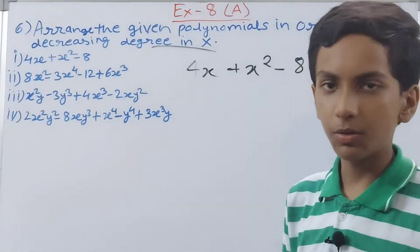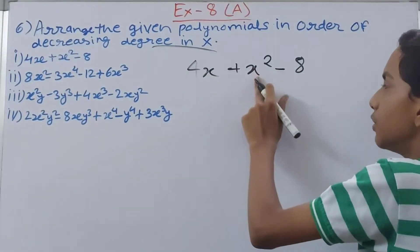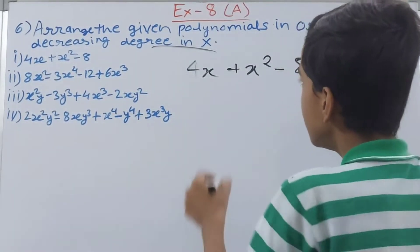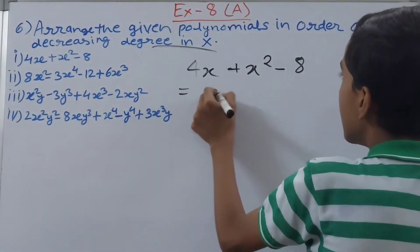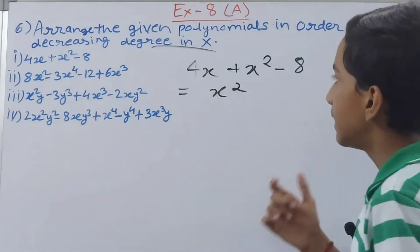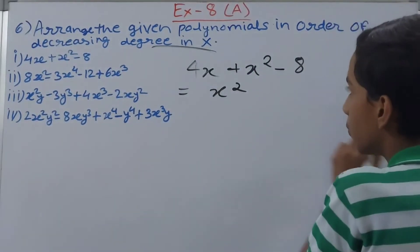Now here only x is there so it will be quite easy. Here you can see the degree of x is 1, here it is 2, and here there is no variable so 0. So that means first you can write here x square, and then after this what we will write? 4x or minus 8? 4x.